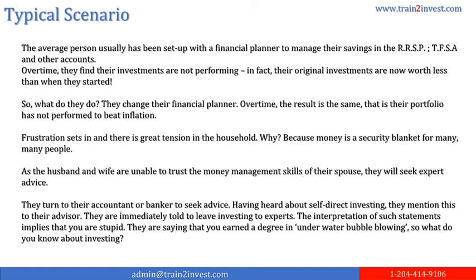Frustration sets in and there is great tension in the household. Why? Because money is a security blanket for many, many people. As the husband and wife are unable to trust the money management skills of their spouse, they will seek expert advice. They turn to their accountant or banker. Having heard about self-directed investing, they mention this to their advisor. They are immediately told to leave investing to experts. The interpretation of such statements implies that you are stupid — they are saying that you earned a degree in underwater bubble blowing, so what do you know about investing?